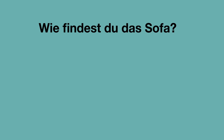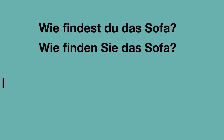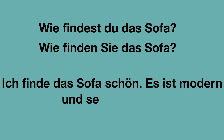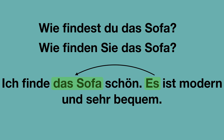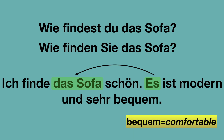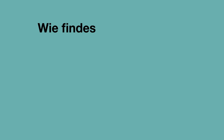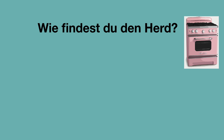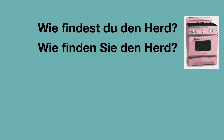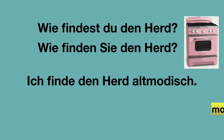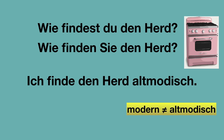Wie findest du das Sofa? How do you find the sofa? Wie finden Sie das Sofa? Antwort: Ich finde das Sofa schön. Es ist modern und sehr bequem. 'Es' refers to 'das Sofa'. Bequem means comfortable. Wie findest du den Herd? How do you find the stove? Wie finden Sie den Herd? Antwort: Ich finde den Herd altmodisch. Modern — das Gegenteil — altmodisch. Modern means modern, altmodisch means old fashioned.